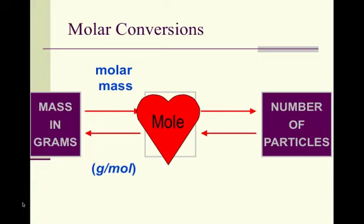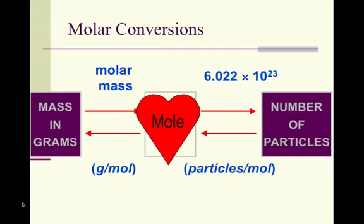We are then in moles. We can go from moles to numbers of particles by using Avogadro's number, 6.022 times 10 to the 23rd. Remember, a mole is very similar to like a dozen. There are 6.022 times 10 to the 23rd things in one mole, just like there are 12 things in one dozen. That's called Avogadro's number. And the units for that are particles per mole.